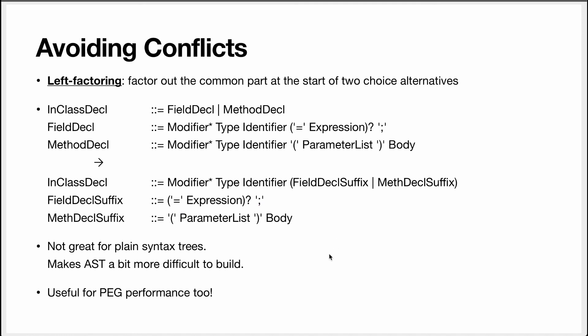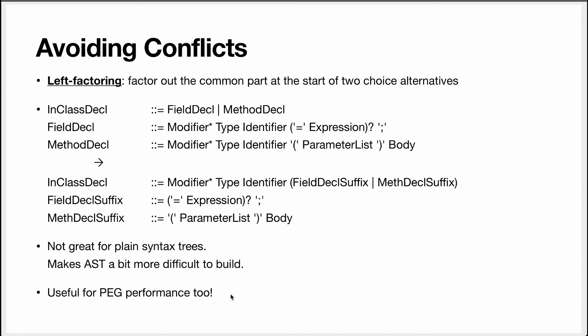Left factoring is not ideal if you are using plain syntax trees, where you get a parse tree following the grammar rules — the prefix and suffix get coded into your tree, and it makes it a bit harder to build the abstract syntax tree. Left factoring can also be useful for PEG performance: without it, parsing a method in PEG requires trying to parse a field first, parsing the whole prefix, then noticing it's a parenthesis so it's not a field, backtracking, trying method declaration, and reparsing the whole prefix again — wasting work. Left factoring eliminates that duplicated work.